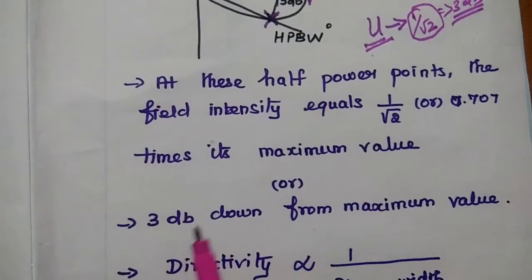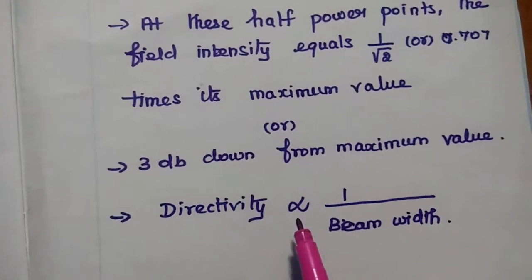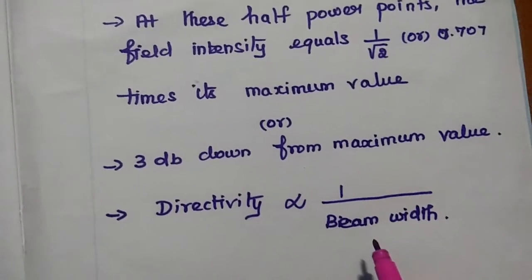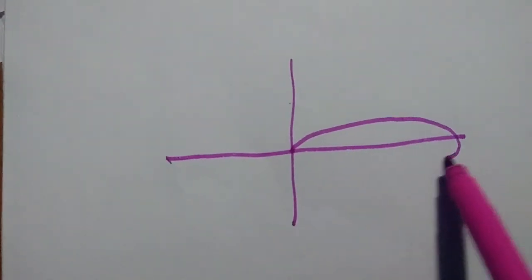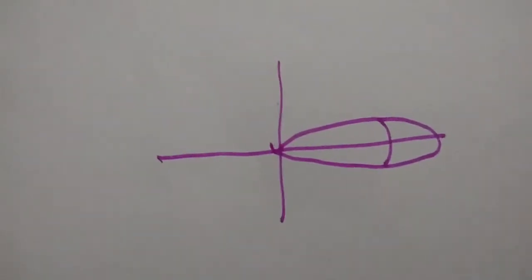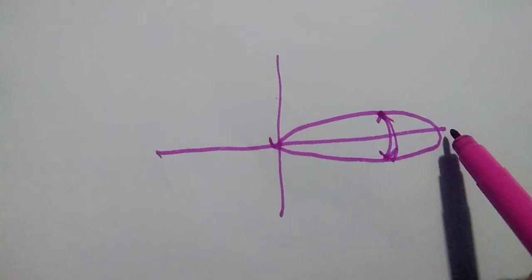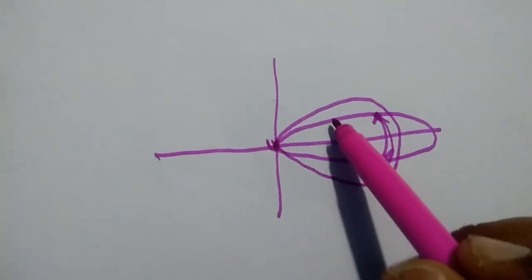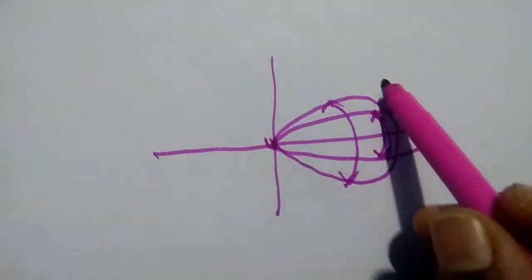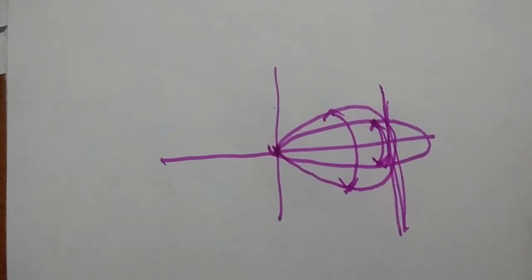This is also represented as 3 dB down from maximum value. The directivity is always inversely proportional to beam width. The directivity represents direction — if beam width is smaller, its directivity is higher. If the beam width is larger, its directivity is lower. Therefore, beam width is always inversely proportional to directivity.